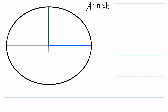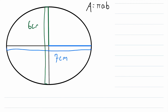Now let's quickly go through an example. Let's say that the length of the major axis of this ellipse is 7 centimeters, and the length of the minor axis is 6 centimeters. Remember, the area is equal to pi times the length of the semi-major axis times the length of the semi-minor axis. The length of the semi-major axis, A, is equal to half the length of the major axis, which is half of 7 centimeters — so A equals one-half times 7 centimeters, which is 3.5 centimeters.